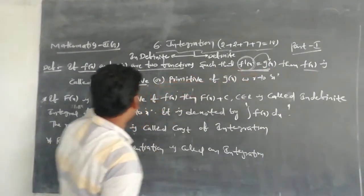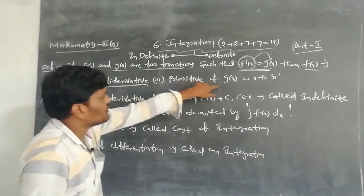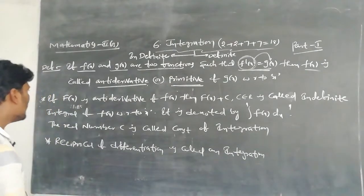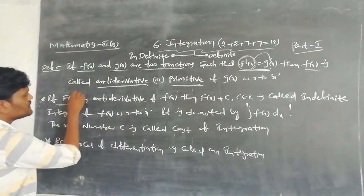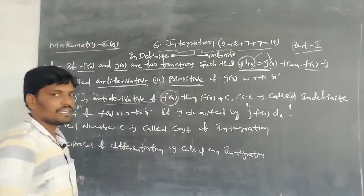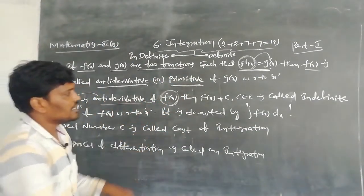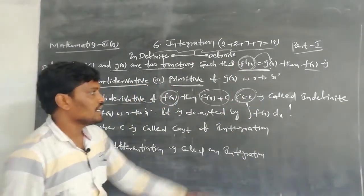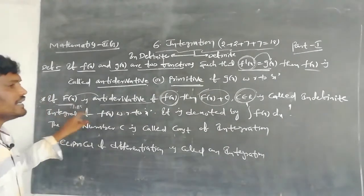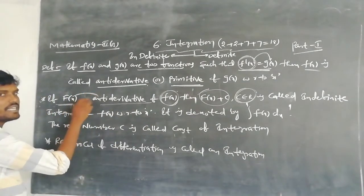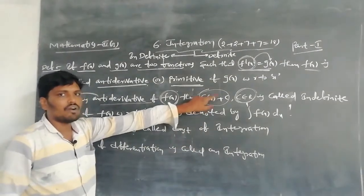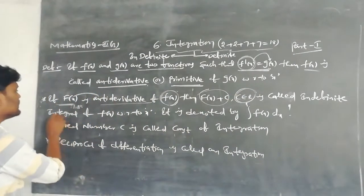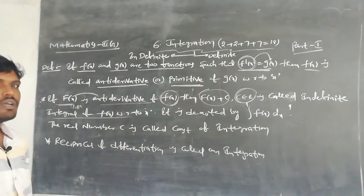Here, f(x) is called the anti-derivative of g(x), also called the primitive of g(x). If capital F(x) is an anti-derivative of f(x), then capital F(x) plus c, where c is a real number, is called the indefinite integration of f(x) with respect to x.